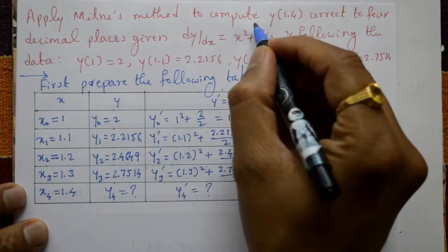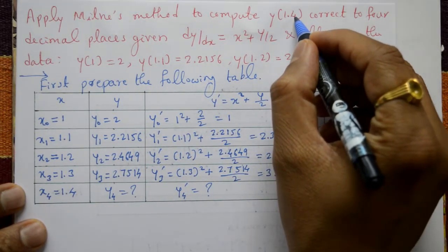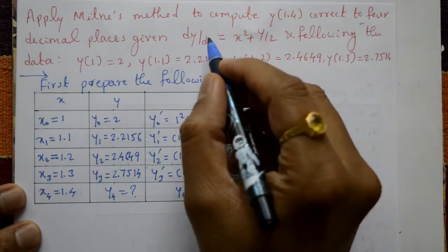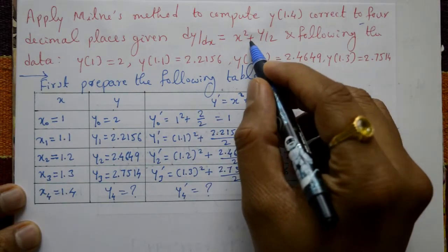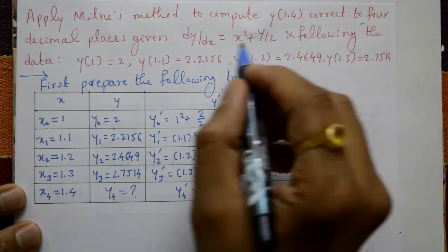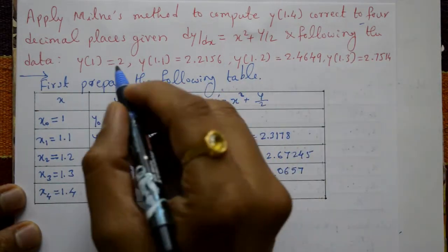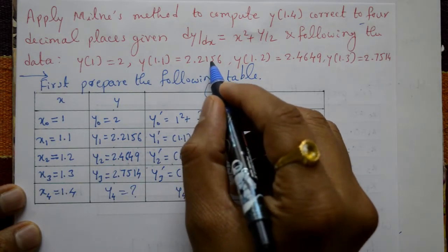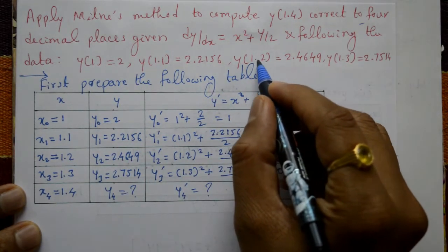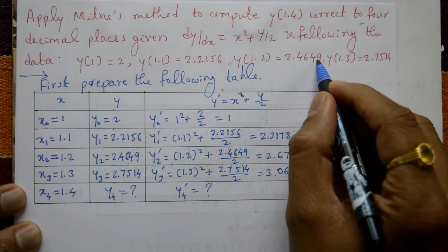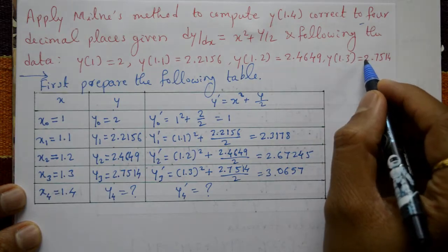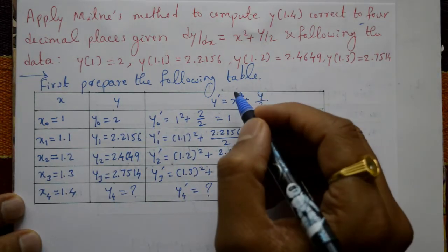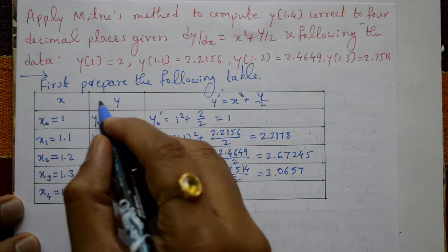Apply Milne's method to compute y(1.4), correct to four decimal places, given the first order first degree equation y' = x² + y/2. The following data values are given: y(1.0) = 2, y(1.1) = 2.2156, y(1.2) = 2.4649, y(1.3) = 2.7514.